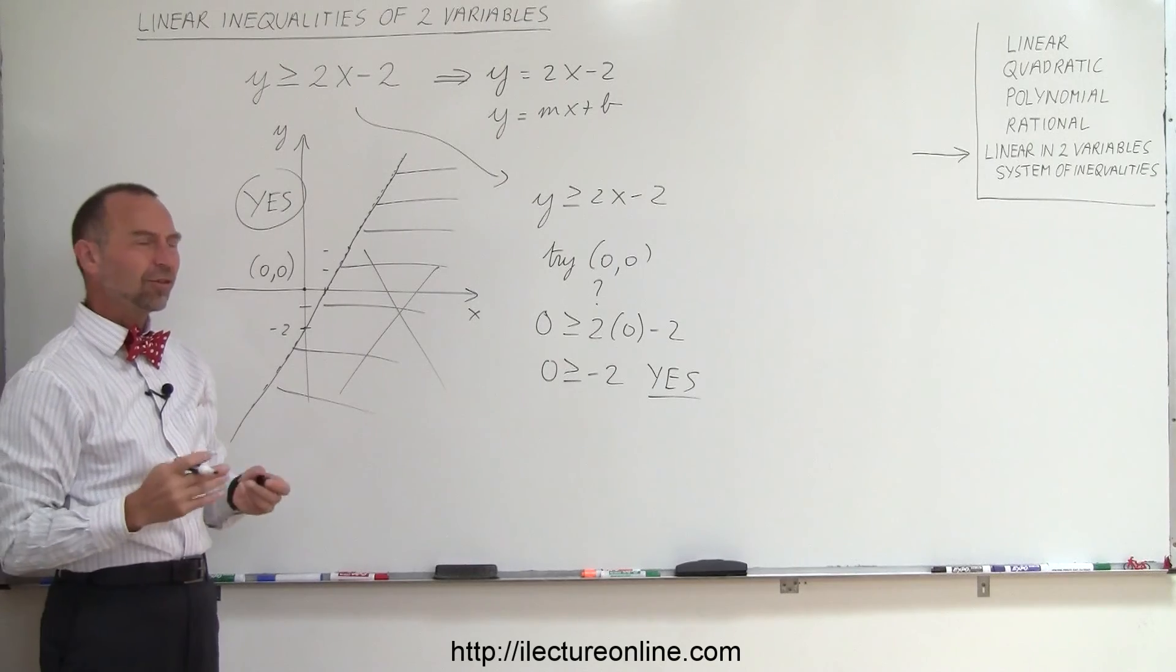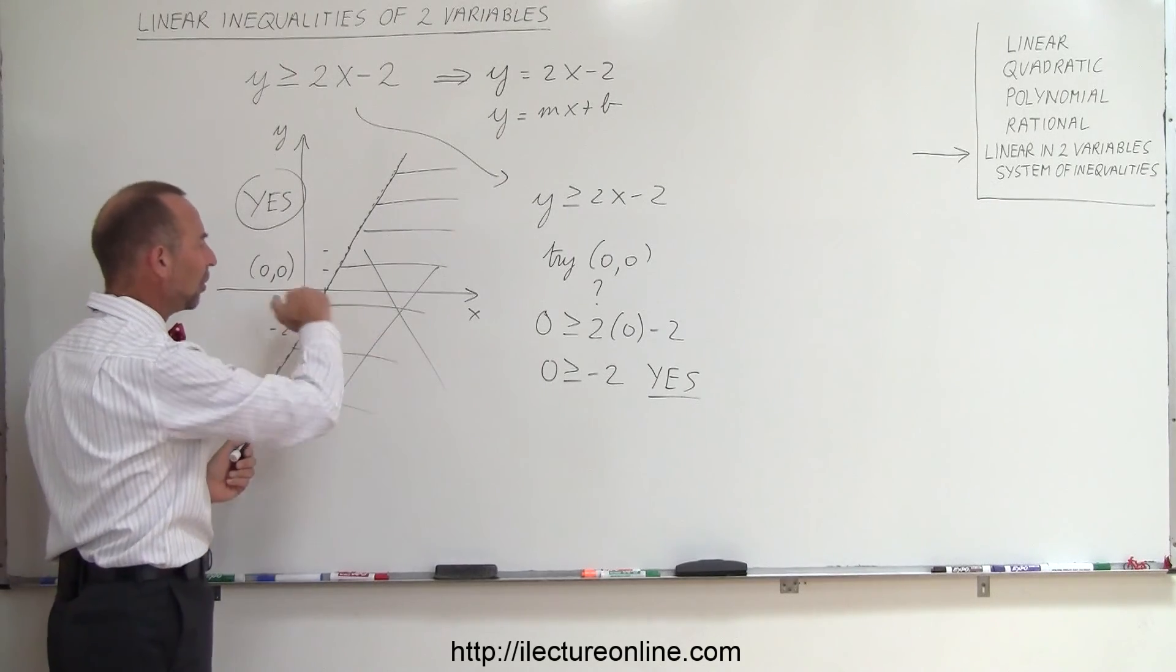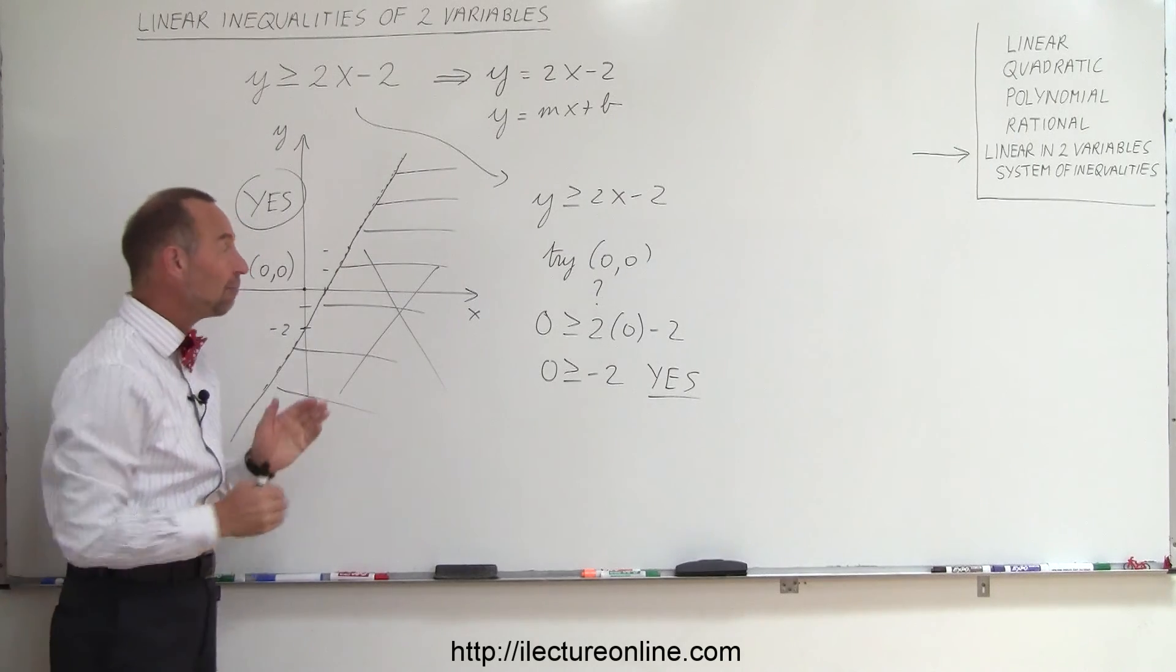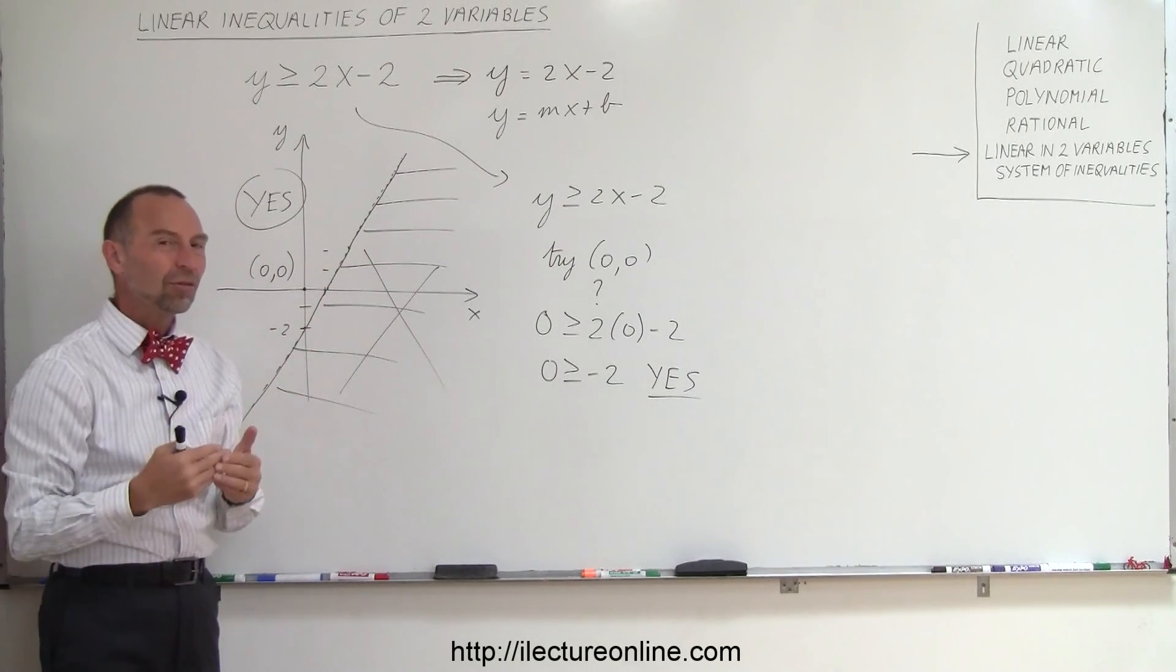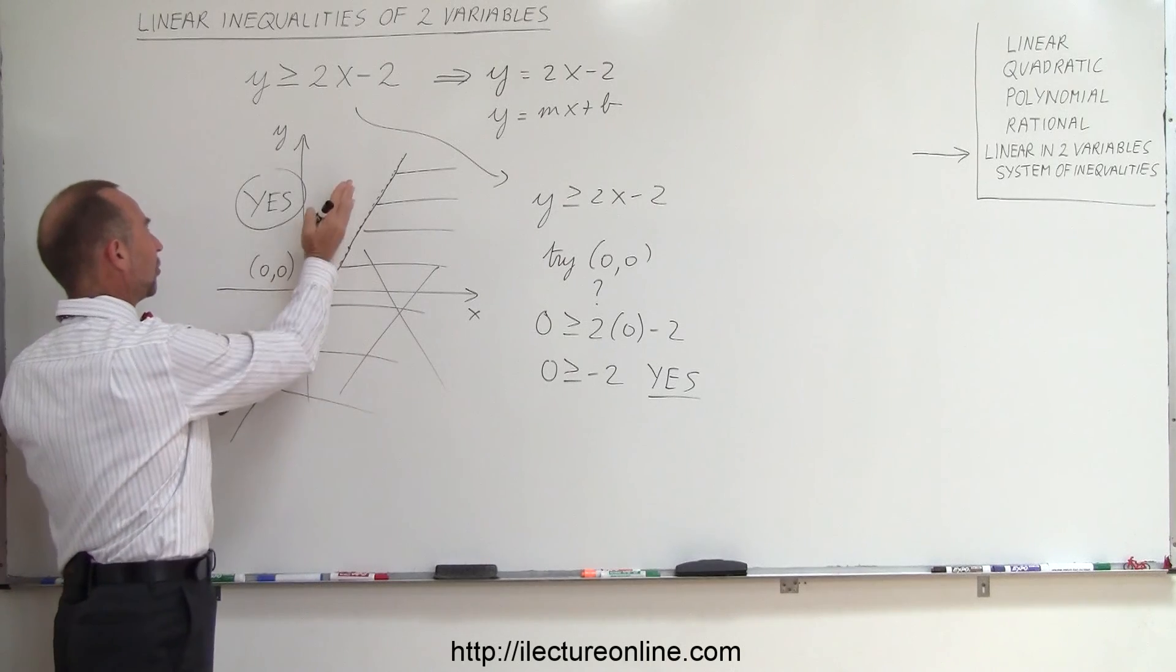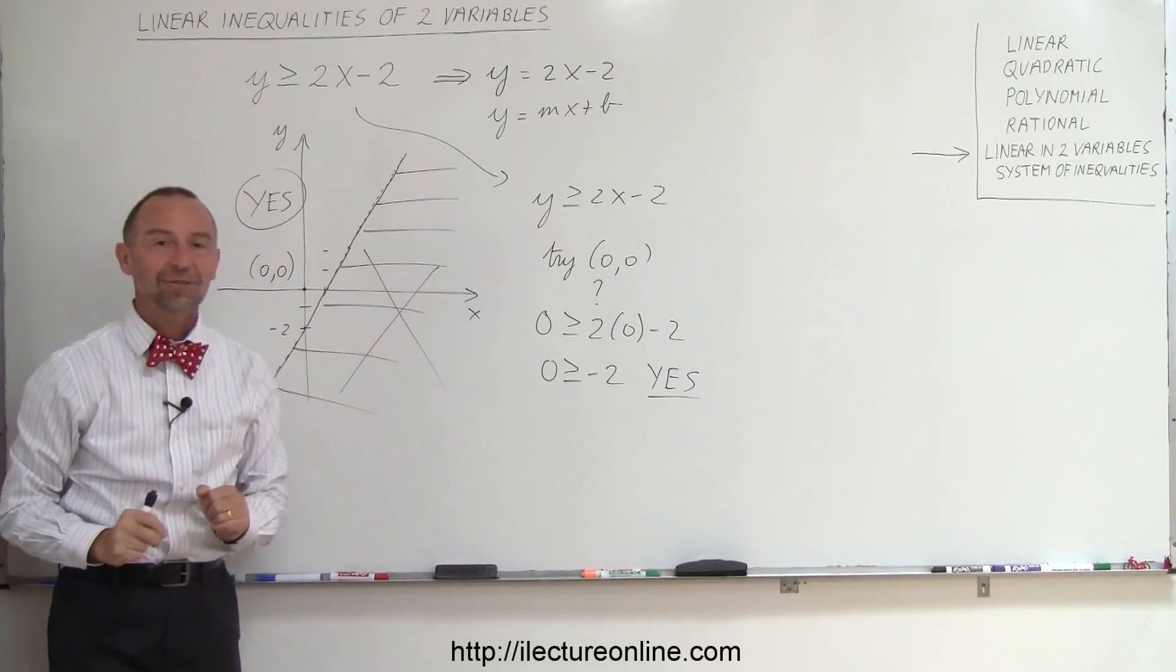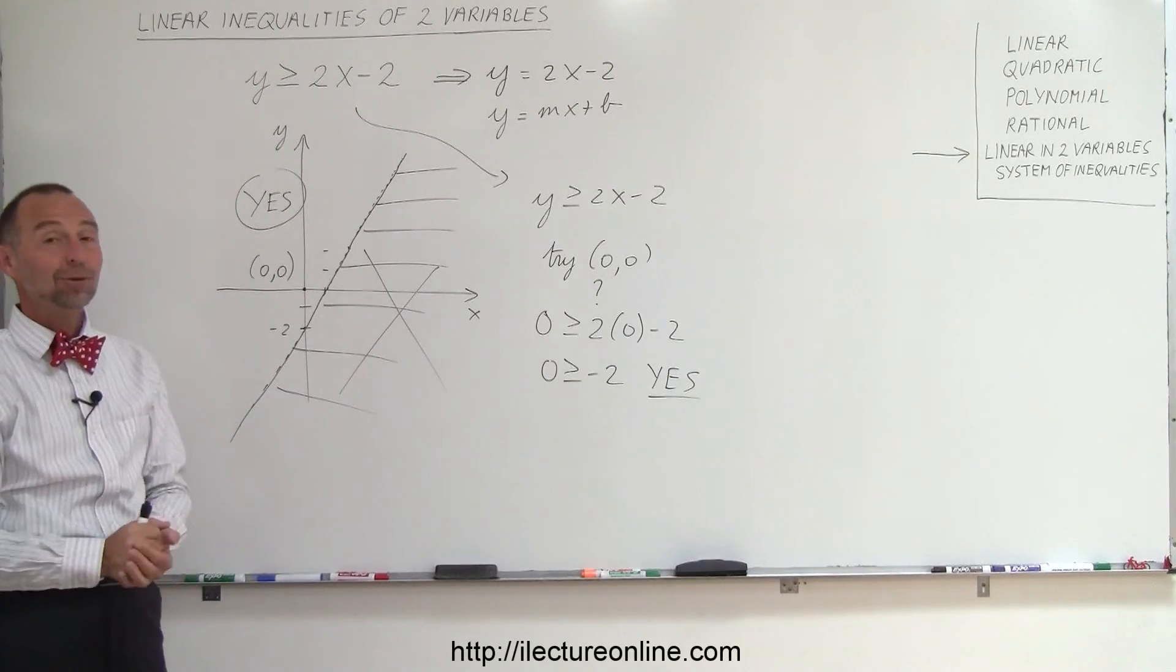Now I know that some textbooks do this the other way around. Some textbooks like to line out the part that does satisfy inequality. The problem with that is if you have multiple lines, it makes it easier to develop that. So this is my preferred solution. This satisfies the solution. This satisfies inequality. That does not satisfy inequality. And that's how we do that.